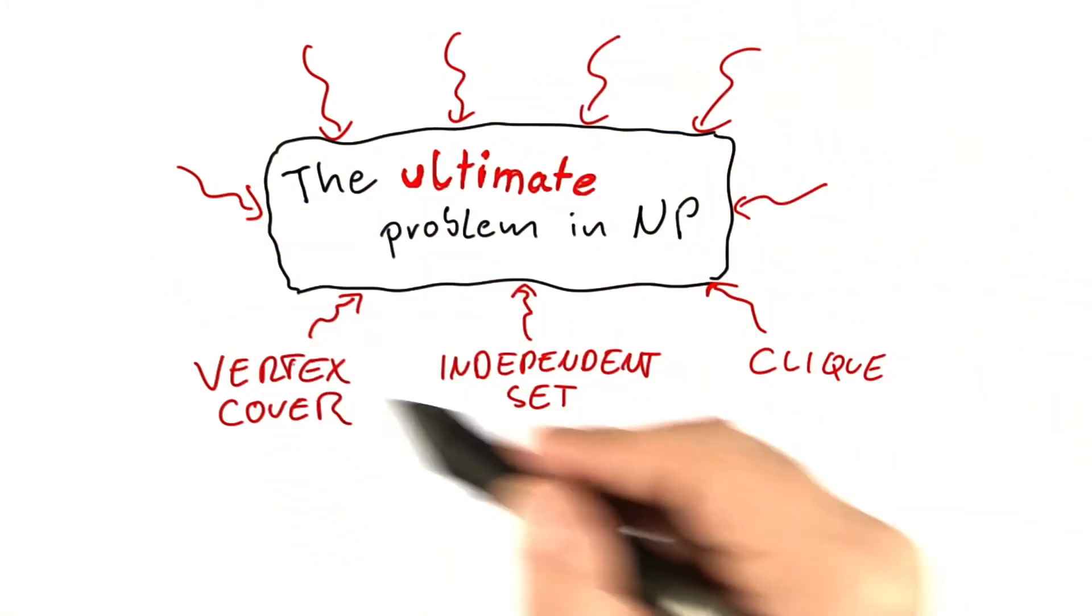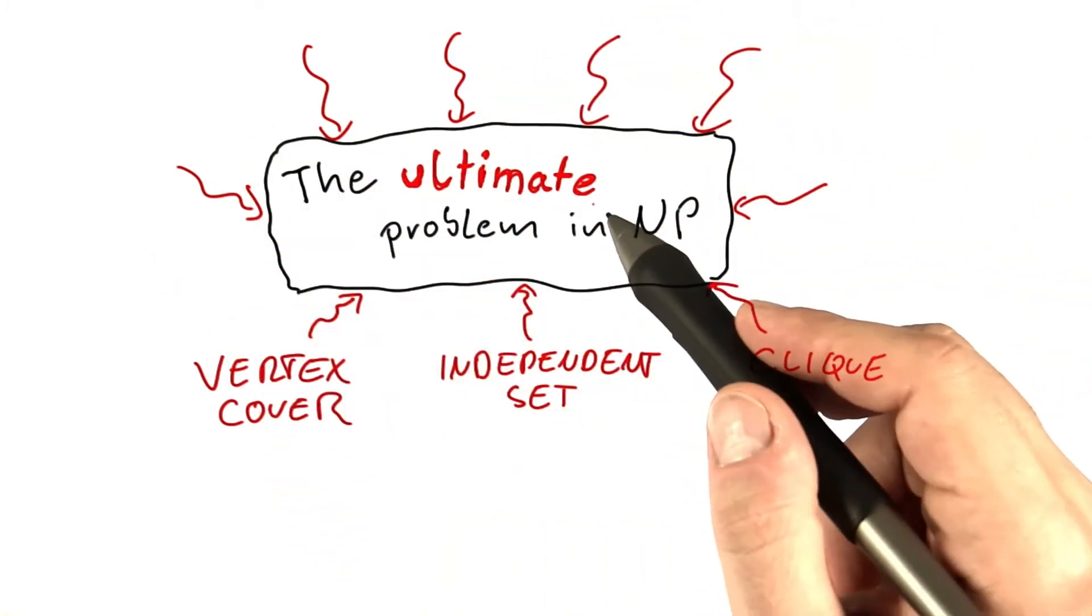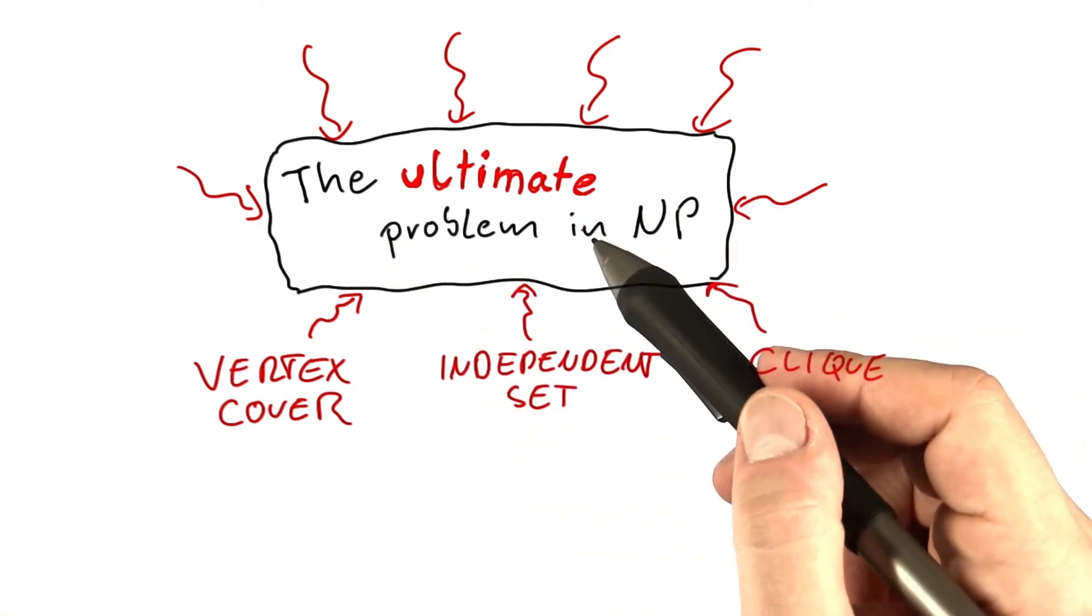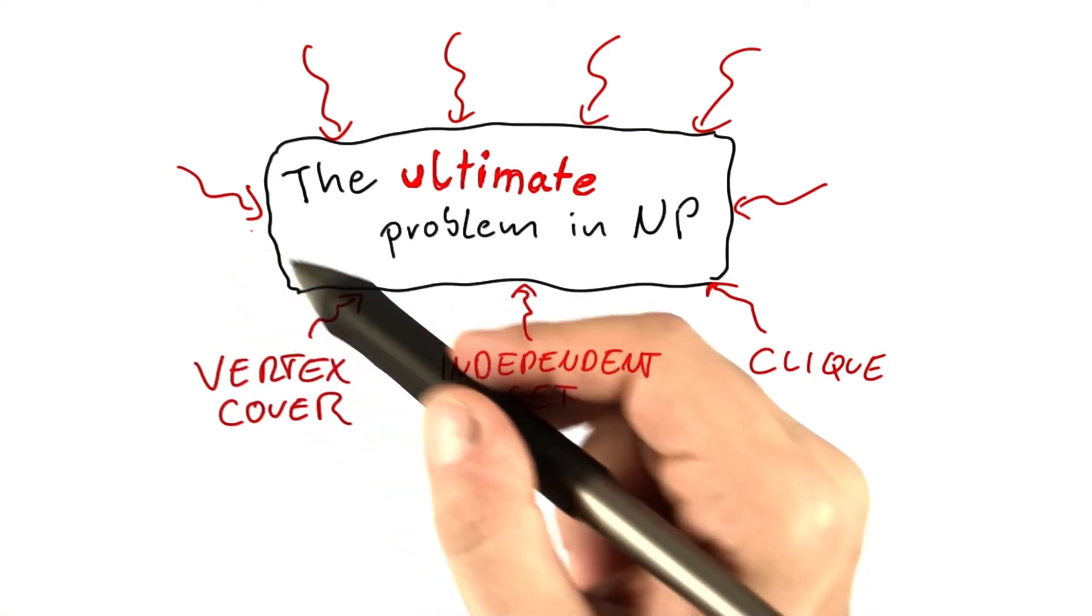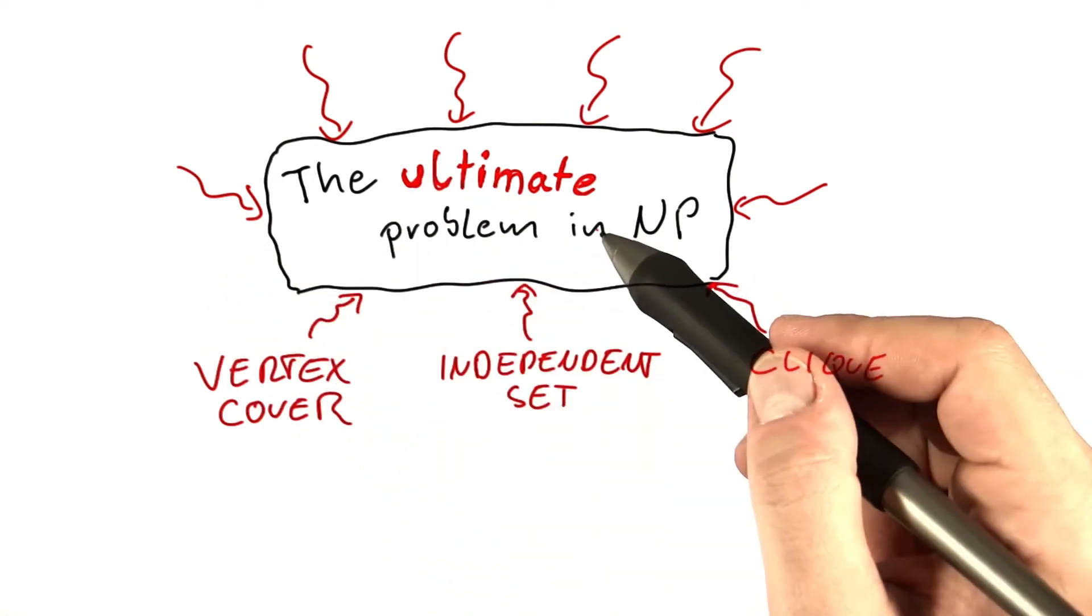So no matter how complicated that problem, as long as it's in NP, that means on a non-deterministic RAM you can solve it in polynomial time, there exists a polynomial time reduction to this ultimate problem.